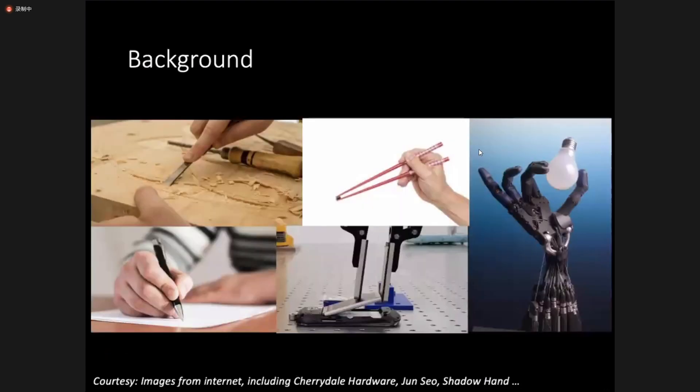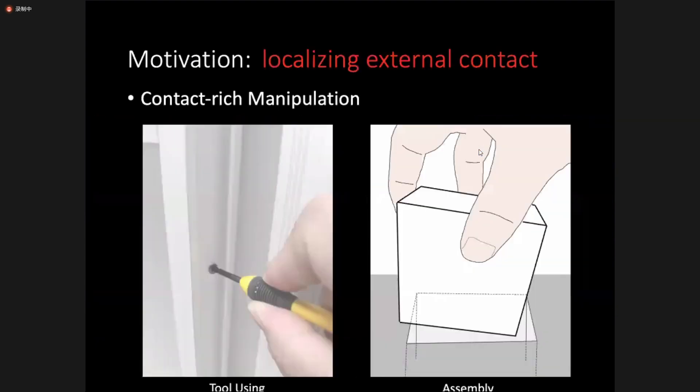Manipulation is largely about controlling contact behaviors. But before we can control contact, we should first be able to sense it. In contact-rich manipulation scenarios such as tool using or assembly, we not only care about the internal contact between the fingers and the object, but also it's critical to keep track of the external unsensed interaction between the object and its environment, such as the point contact between a screwdriver and the nut, or the line contact between the pegging box and the hole.